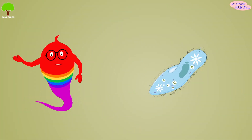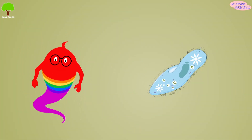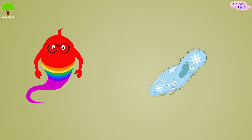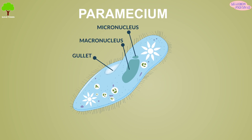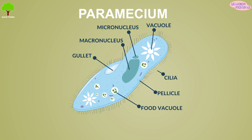Here's a diagram of a unicellular microorganism: Paramecium. Its parts are gullet, macronucleus, micronucleus, contractile vacuole, cilia, pellicle, food vacuole, anal pore, and contractile vacuole.